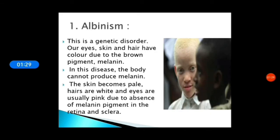Let's learn in detail about albinism. This is a genetic disorder. Our eyes, skin, and hair have color due to the brown pigment melanin. But in this disease, the body cannot produce melanin, and that is why the skin becomes pale, hair are white, and eyes are usually pink due to absence of melanin pigment in the retina and sclera.